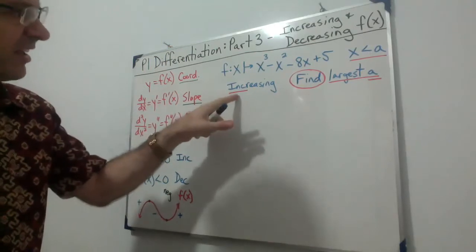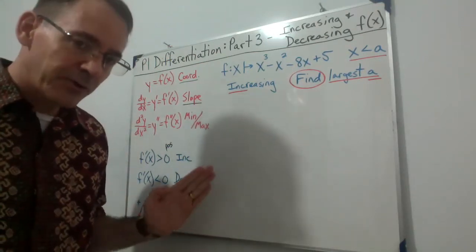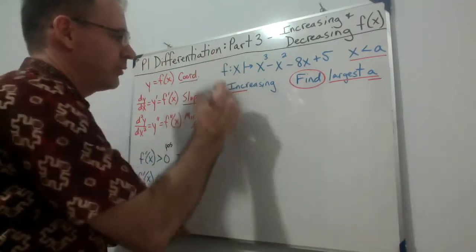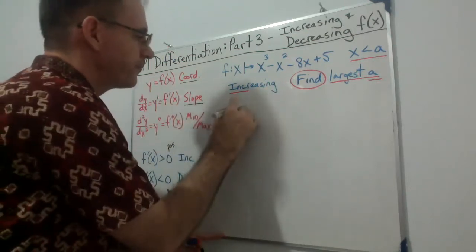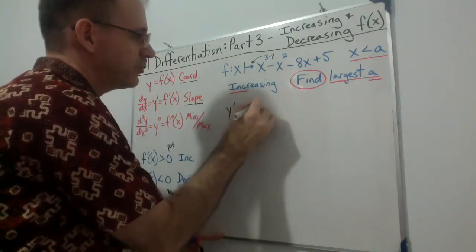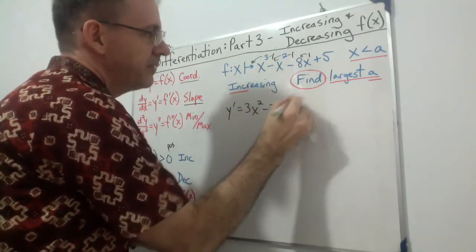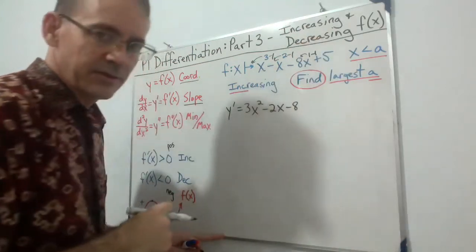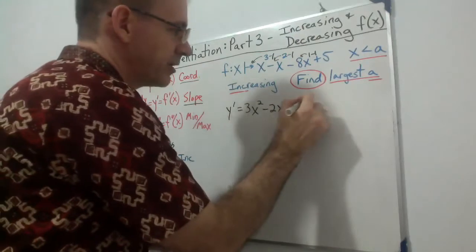As soon as it tells us it's an increasing function, that's our clue we're dealing with slope — because for a function to be increasing, its slope has to be positive, and slope is the first derivative. So we find the first derivative using y prime: multiply to the front and subtract 1, giving us 3x² − 2x − 8, and the derivative of a constant is 0.